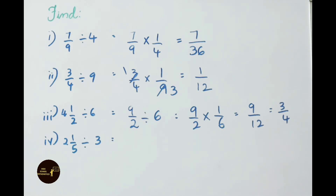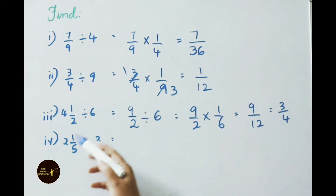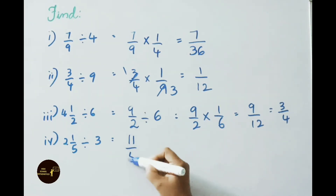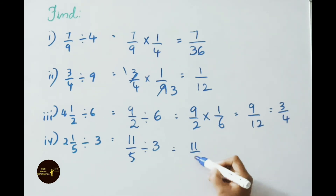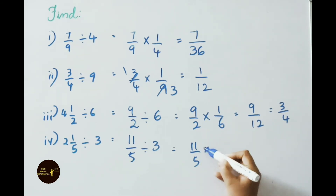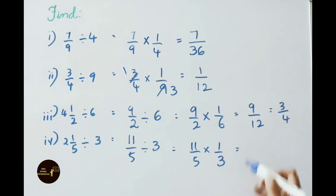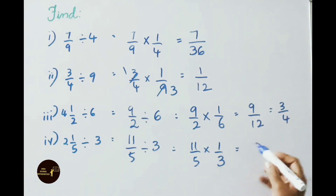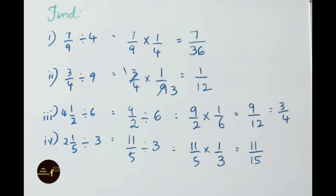See the fourth sum now: 2 and 1/5 divided by 3. Convert mixed fraction to improper fraction. 5 × 2 = 10, 10 + 1 = 11. Write down 11/5 divided by 3. That equals to 11/5 × reciprocal of 3, which is 1/3. Multiply the numerators: 11 × 1 = 11, denominators: 5 × 3 = 15. So the answer is 11/15.